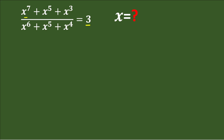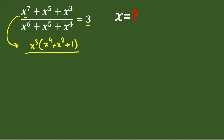The basic approach to solve this type of problem is to take the maximum power common from the numerator. From the numerator we take out x raised to the power 3 common, and the remaining terms are x⁴, x², and 1. Likewise, in the denominator we take common x raised to the power 4, and the remaining terms are x², x, and 1. That is equal to 3 on the right-hand side.